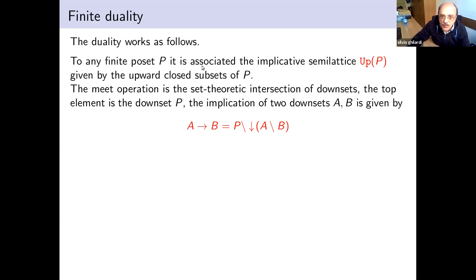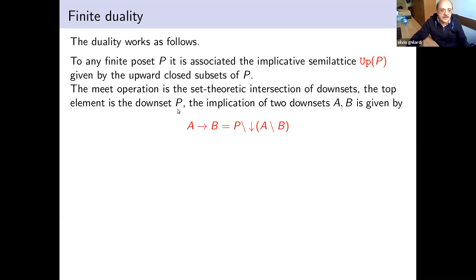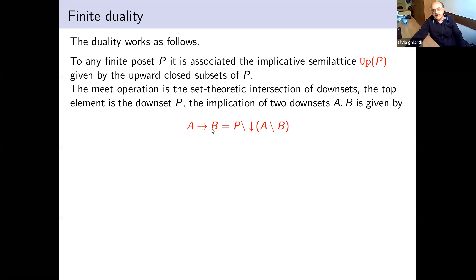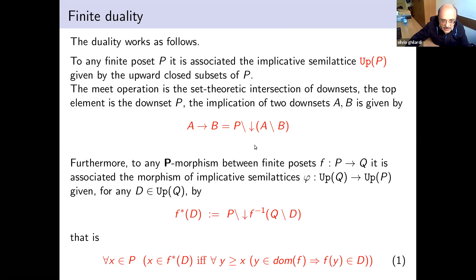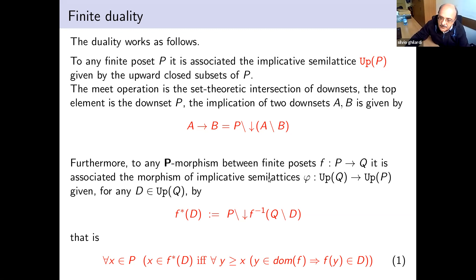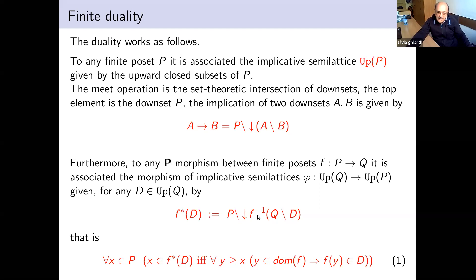To any finite poset we associate the implicative semilattice of upsets — upward-closed subsets — where the meet is intersection, the top is the full set, and the implication is given by the standard characterization from intuitionistic logic. We have to be careful about how the functor works for maps, because if I have a partial map the associated morphism of implicative semilattices is given by a specific formula — not precisely the inverse image.